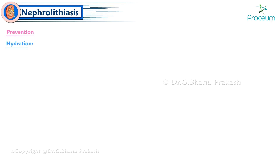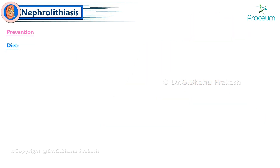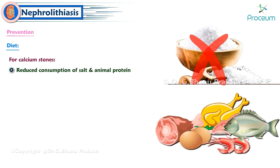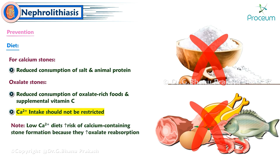Prevention includes adequate hydration — more than or equal to 2.5 liters per day. For calcium stones, reduce consumption of salt and animal protein. For oxalate stones, reduce oxalate-rich foods and supplemental vitamin C. Calcium intake should not be restricted; note that low-calcium diets actually increase the risk of calcium-containing stone formation by increasing oxalate reabsorption.